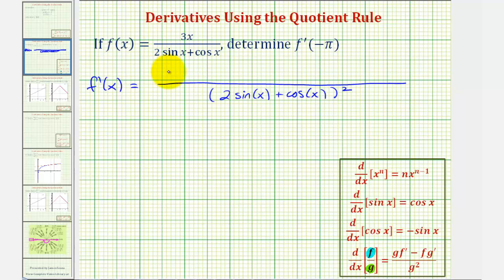Well, g is just the denominator, so we have two sine x plus cosine x times f prime, which would be the derivative of three x, which is just three.